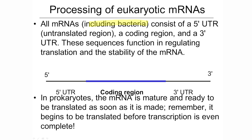when it's complete and finished, not only does it have a coding region — the part that actually has the information that's going to go and get translated into a polypeptide — but it also has a 5' UTR, or untranslated region, and then there's a 3' UTR at the other end. These untranslated regions, as the name tells you, are not carrying coding information from the DNA, but they're doing something else.